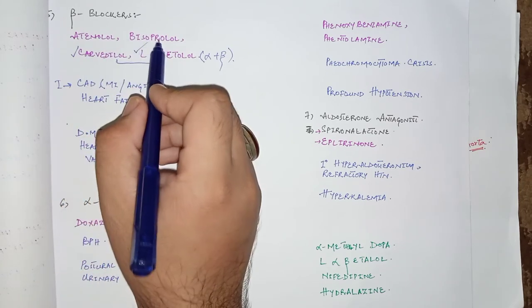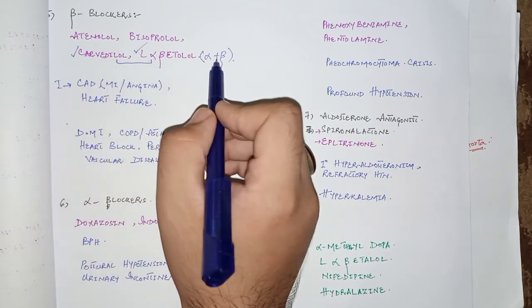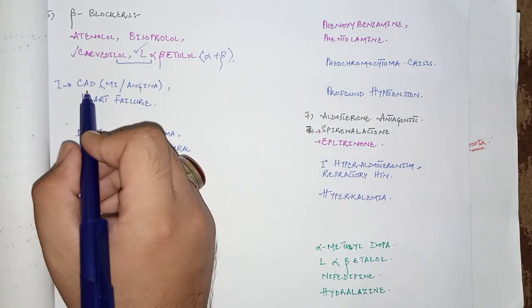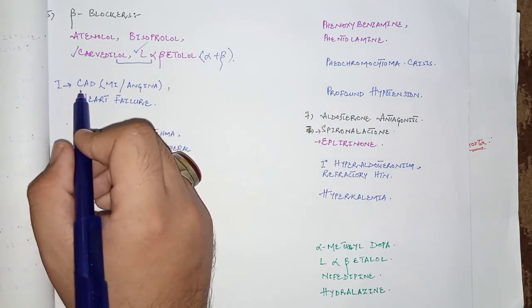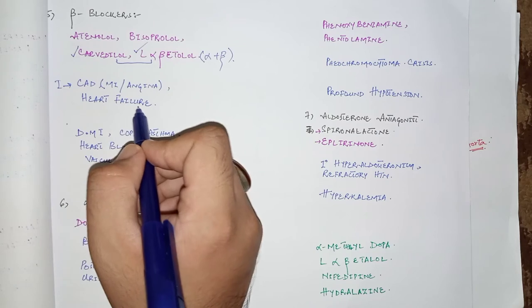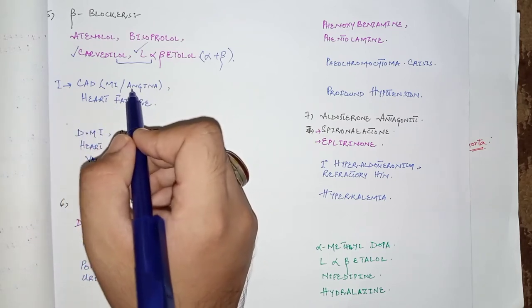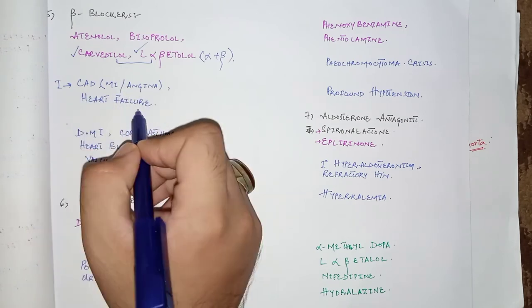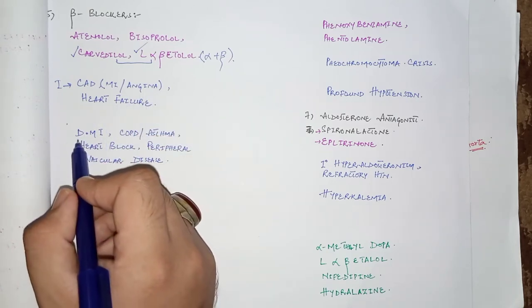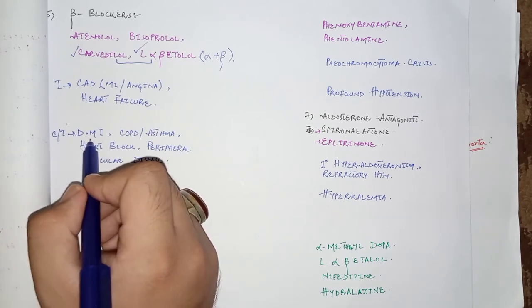The next important antihypertensives are beta blockers, including atenolol, bisoprolol, carvedilol, and labetalol. Labetalol and carvedilol are mixed alpha and beta blockers. The indications for beta blockers are hypertension with coronary artery disease such as angina or myocardial infarction, and heart failure. The contraindications include type 1 diabetes mellitus, because beta blockers mask the features of hypoglycemia after insulin.